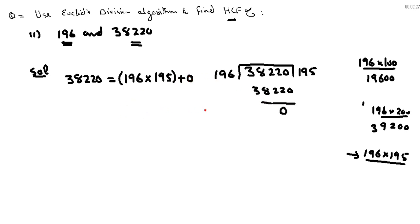Since the remainder is zero, the divisor by which we divided is the highest common factor. Therefore, the HCF — highest common factor — between these two numbers 196 and 38220 is 196.